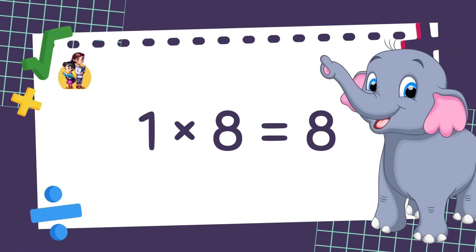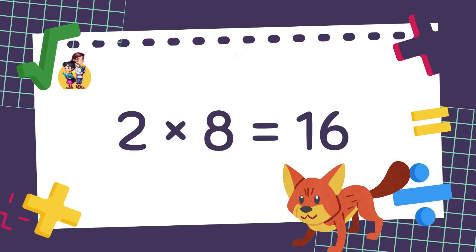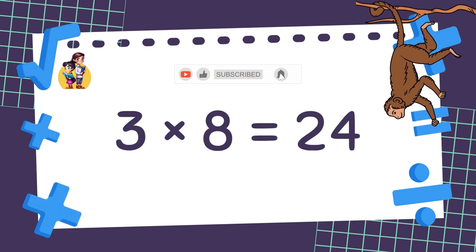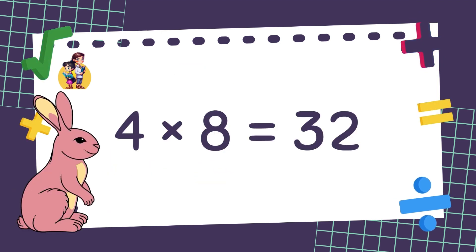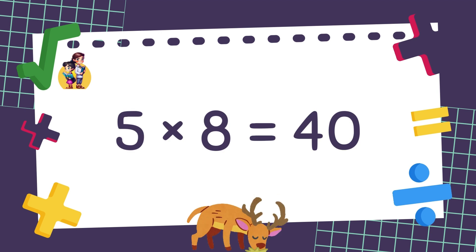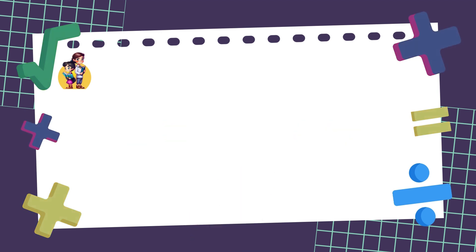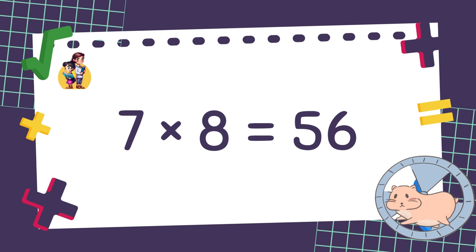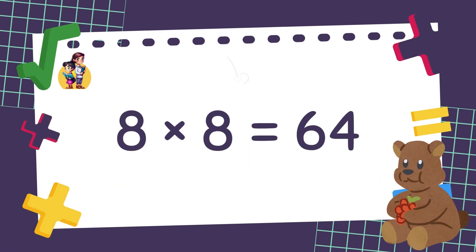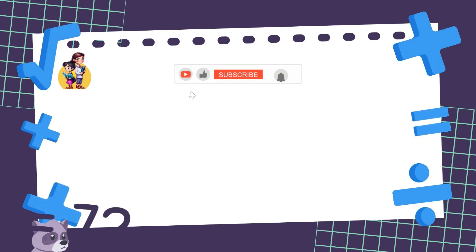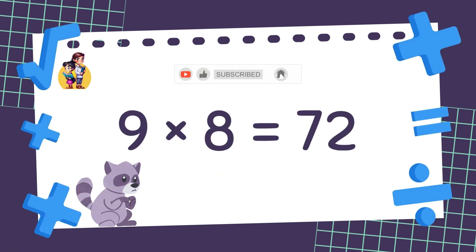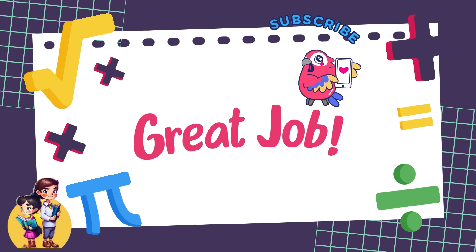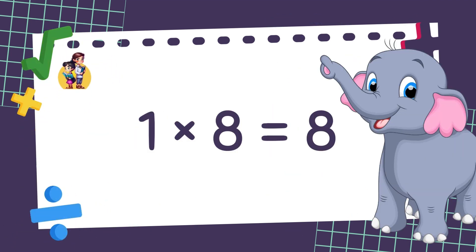1 times 8 is equal to 8. 2 times 8 is equal to 16. 3 times 8 is equal to 24. 4 times 8 is equal to 32. 5 times 8 is equal to 40. 6 times 8 is equal to 48. 7 times 8 is equal to 56. 8 times 8 is equal to 64. 9 times 8 is equal to 72.